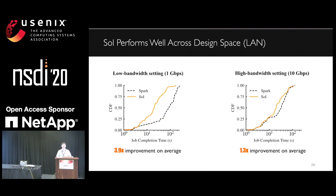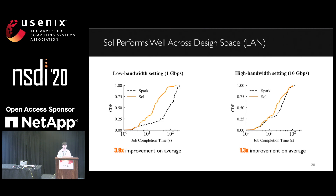In addition to the wide area setting, SOAR can still work well with different network bandwidth settings in the LAN. The left figure shows SOAR performance in a low bandwidth setting, and we can notice SOAR outperforms Spark by around four times on average. And even when we move to a high bandwidth setting, as shown in the right figure, SOAR can still match Spark. SOAR performs well across the design space.